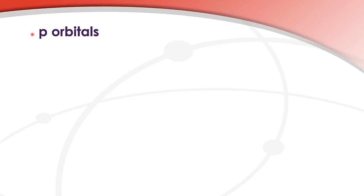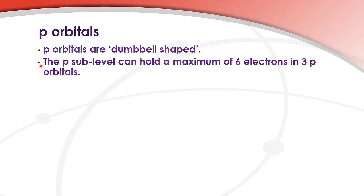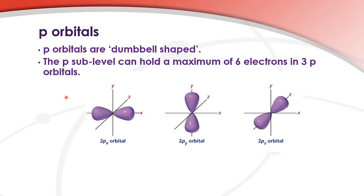P orbitals. P orbitals are dumbbell shaped. The p sub-level can hold a maximum of 6 electrons in 3 p orbitals. Here are the dumbbell shaped p orbitals: we have 2px, 2py, and 2pz.